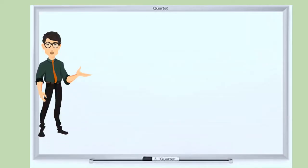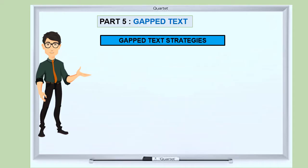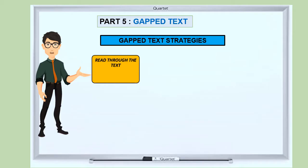Let's move on to the strategies that we can use in a gap text. The first strategy is to read through the text. When we read through the text, we will have an overall impression of the text. We will know basically what the text is all about — the main ideas, the supporting details — and this will help us in finding the answers or making intelligent guesses for the answers.